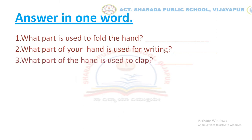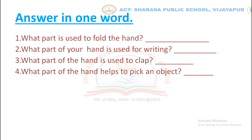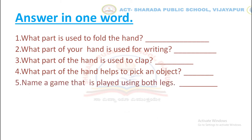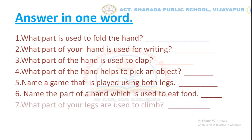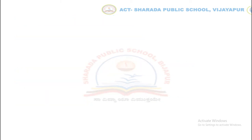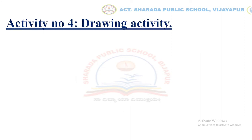What part of the hand helps to pick an object? Name a game that is played using both legs. Name the part of the hand which is used to eat food. What part of your legs are used to climb? Now let's move to Activity Number Four: draw any two external parts of the body in the given boxes.